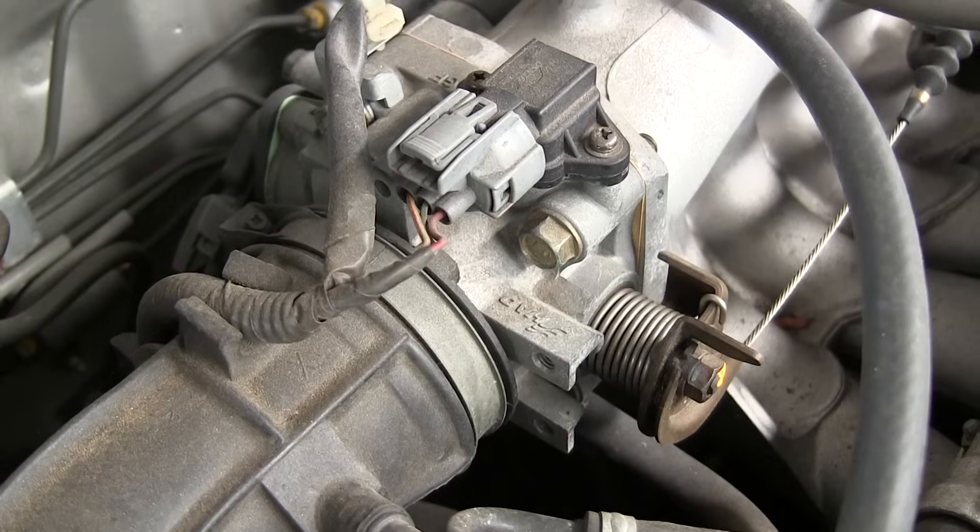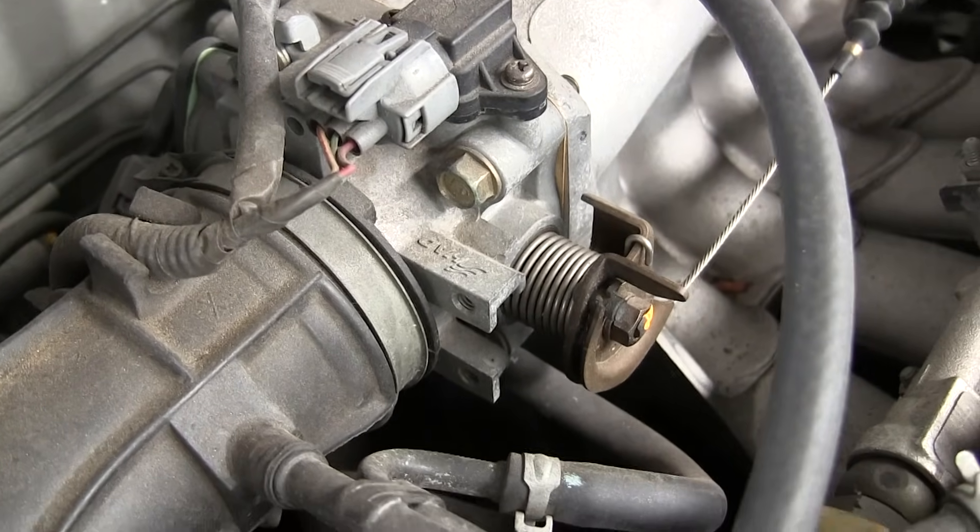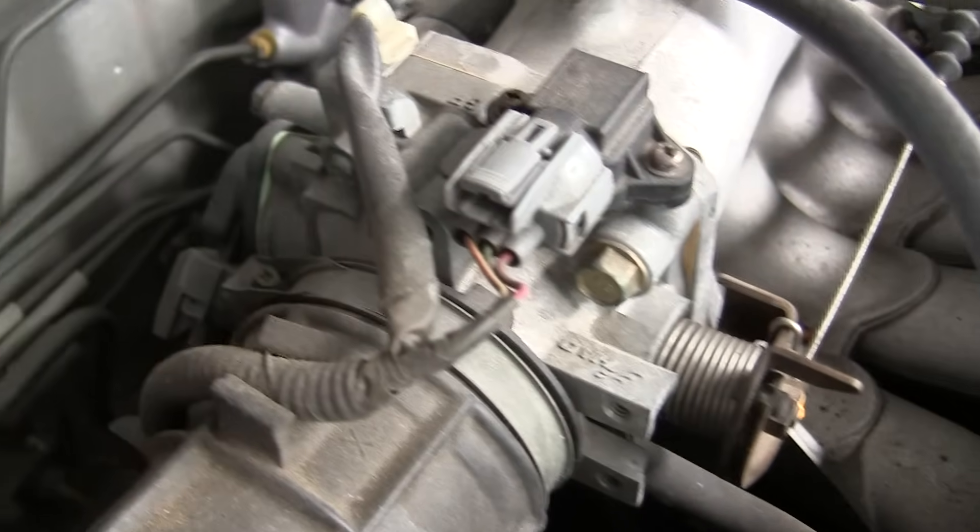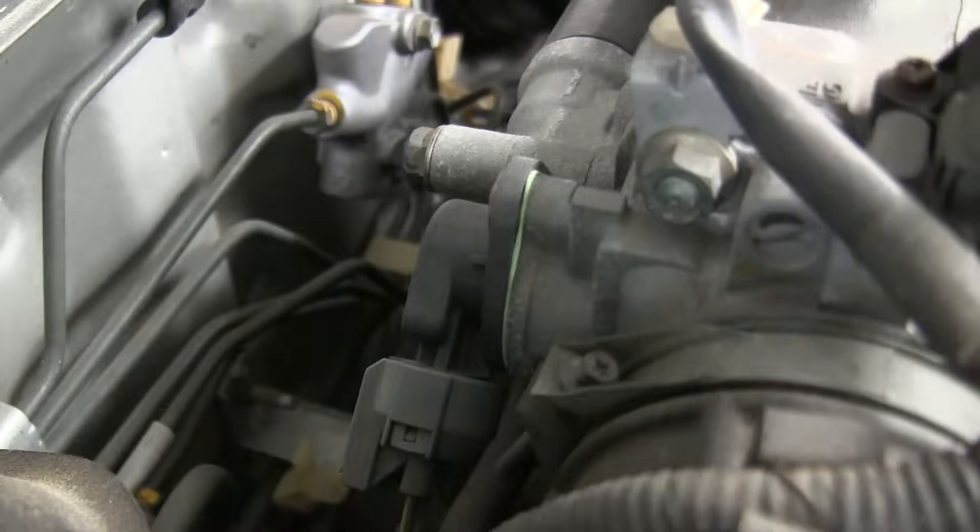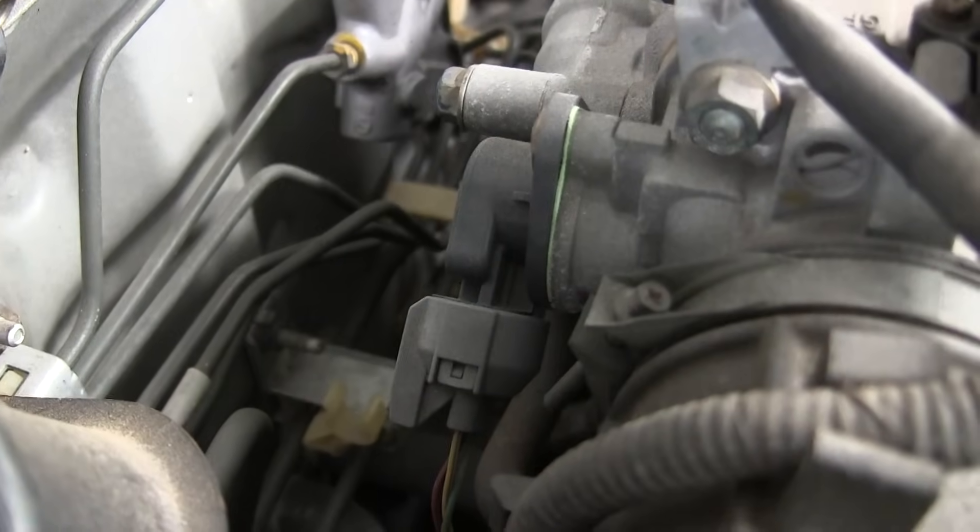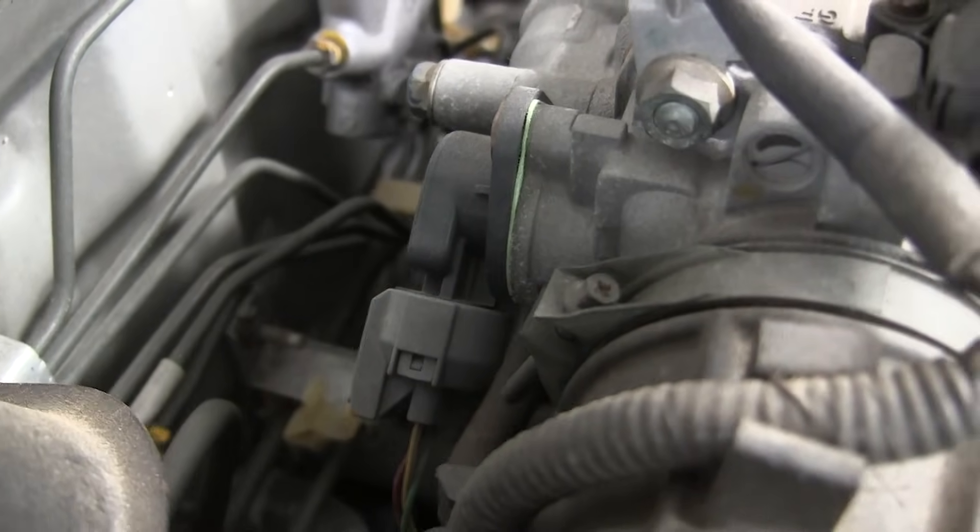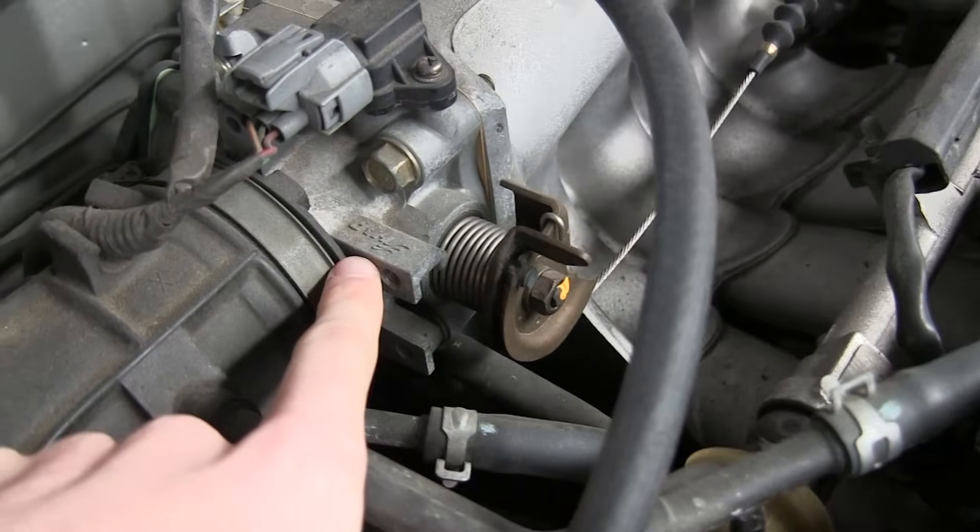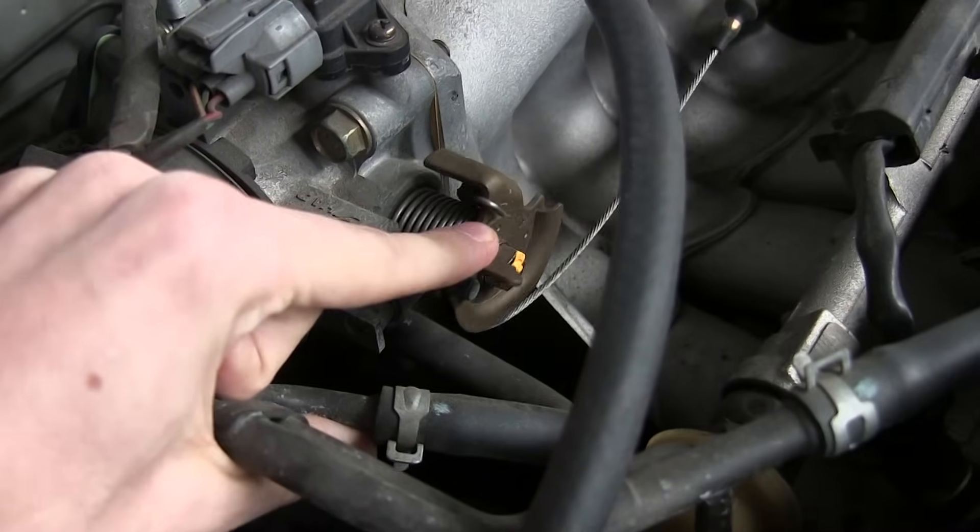I'm going to show you first on my car what this looks like. So here we have the throttle body on my car, and this item right here is the throttle position sensor. So that's going to know how the butterfly valve, which is inside of the throttle body, is oriented based on its movement.